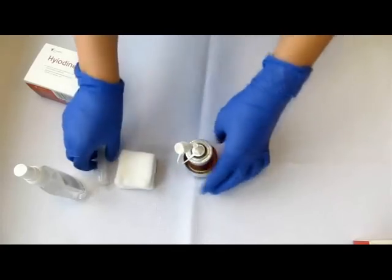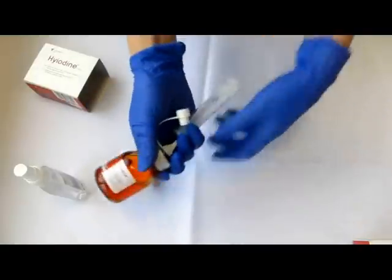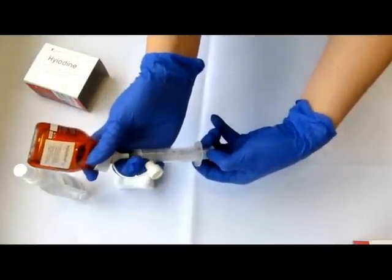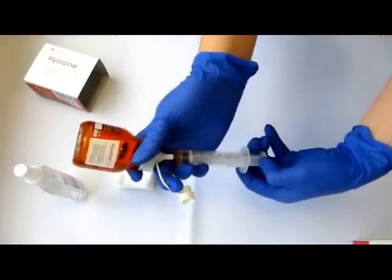Open the spike and insert the syringe inside. Turn the bottle up and withdraw the needed amount of gel into the syringe.